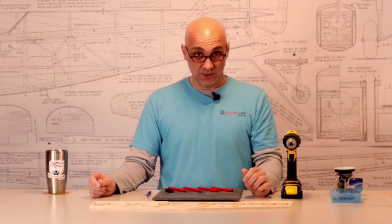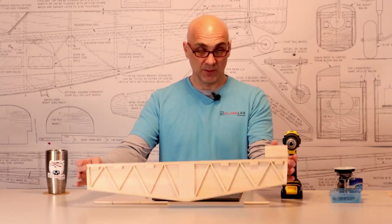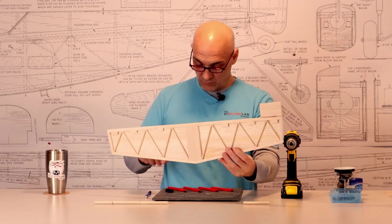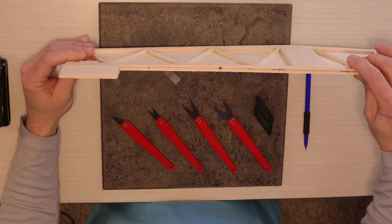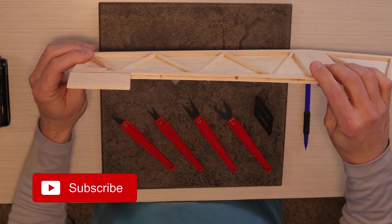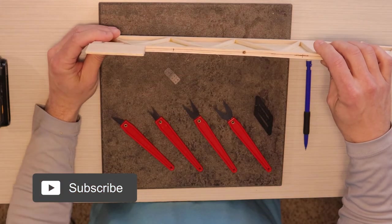So the process is pretty much exactly the same as the CA type hinges. We're just going to create a slot in between the fibers of the wood. And the way you do that, again, we're starting with my horizontal stab left over from the Duelist project, if you've been following our podcast.